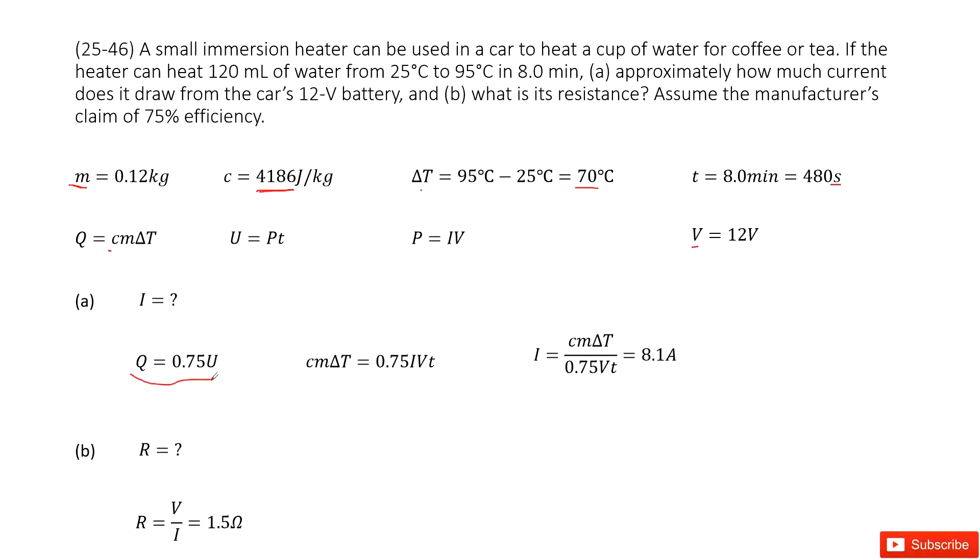Energy conserved. And then we input the Q as cmΔT and U as IVT. Then very easily we can get the function for current I. Input all the given quantities, you get answer there.